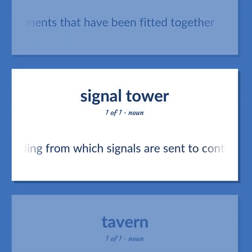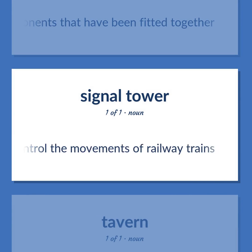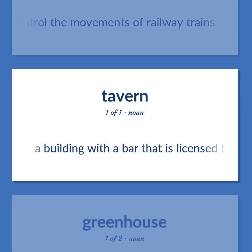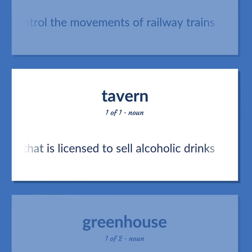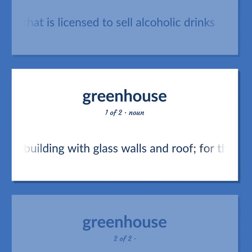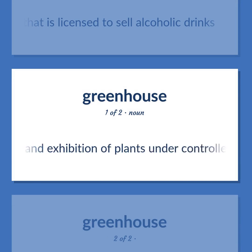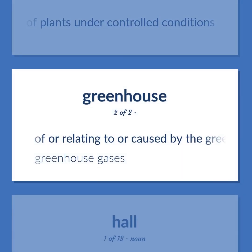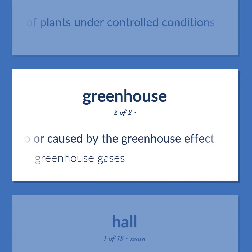Signal box: a building from which signals are sent to control the movements of railway trains. Public house: a building with a bar that is licensed to sell alcoholic drinks. Greenhouse: a building with glass walls and roof for the cultivation and exhibition of plants under controlled conditions. Of or relating to or caused by the greenhouse effect — greenhouse gases.